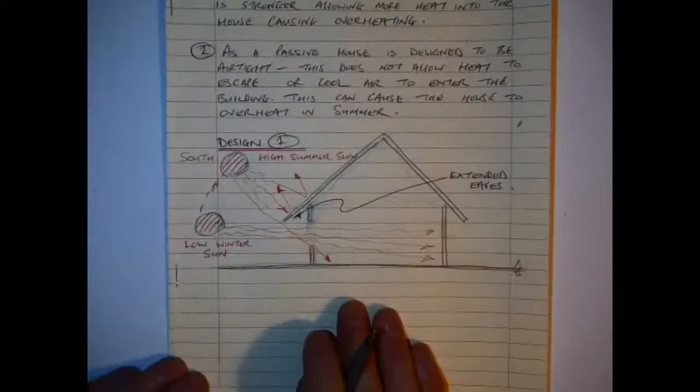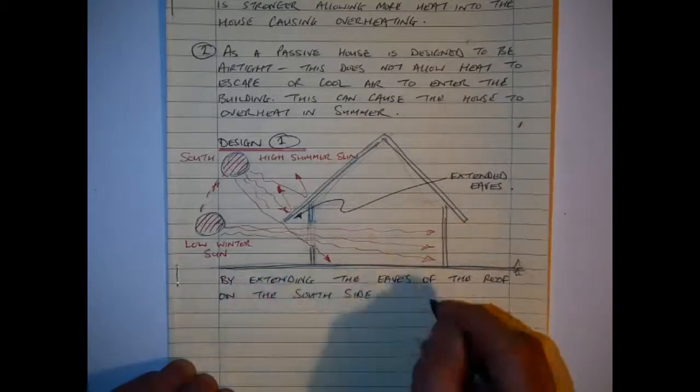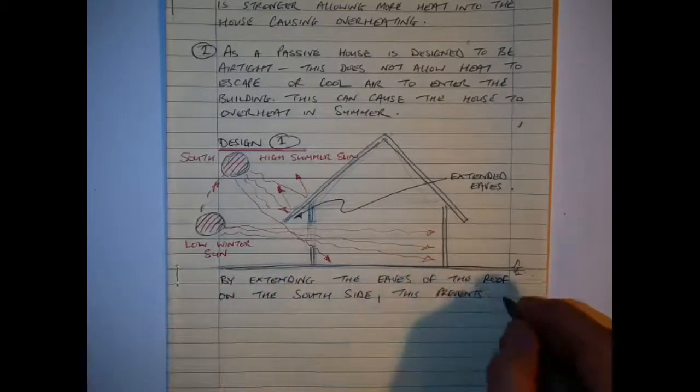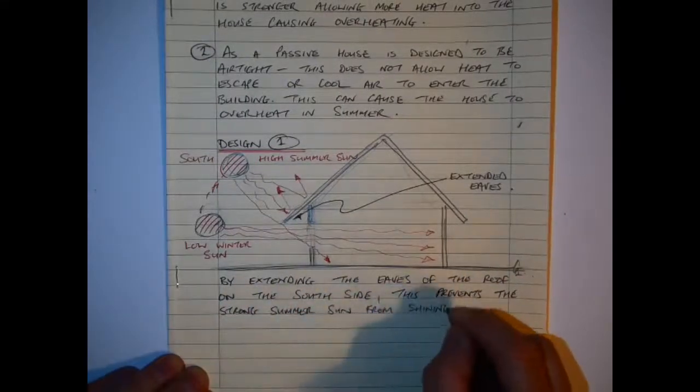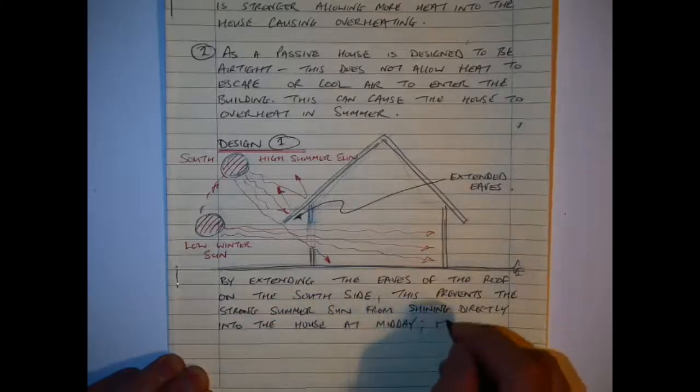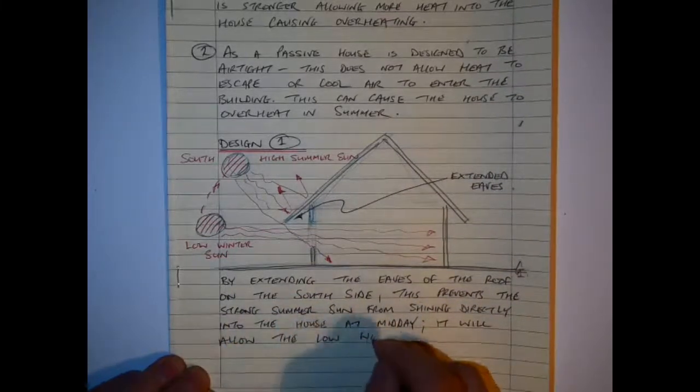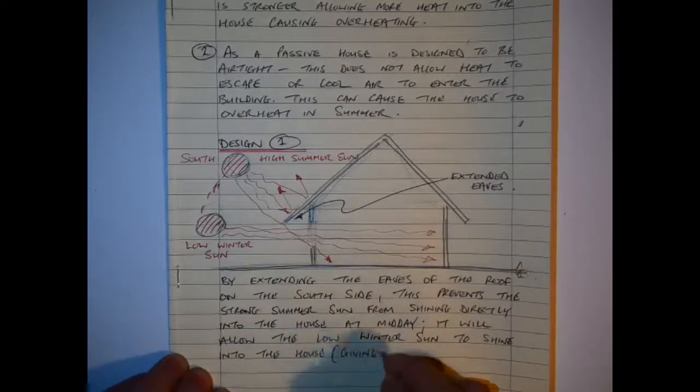So by extending the eaves of the roof on the south side, it prevents a strong summer sun shining directly into the house at midday and it will allow low winter sun to shine in and it gives it maximum solar heat gain. Of course you need thermal mass in the floors to reflect the heat back as well too. But that is sufficient to show one design which will actually reduce our overheating.